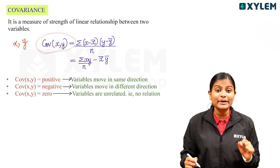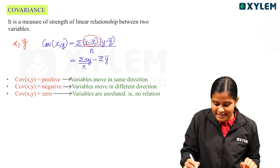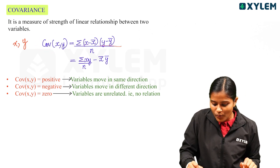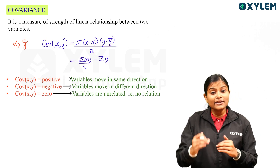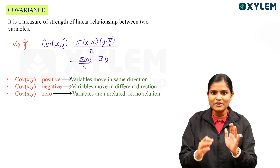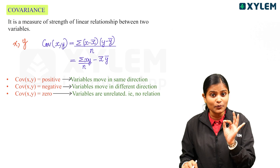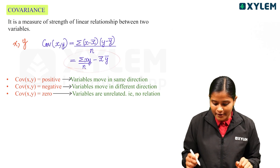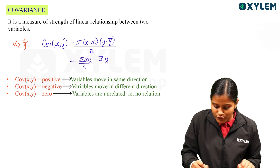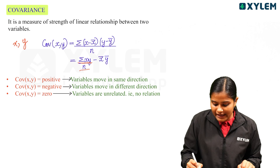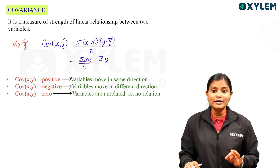The Covariance equation is: summation of (x minus x-bar) into (y minus y-bar), divided by n. We can simplify this for calculation purposes. The simplified formula is: Covariance of XY equals summation of XY divided by n, minus x-bar into y-bar.